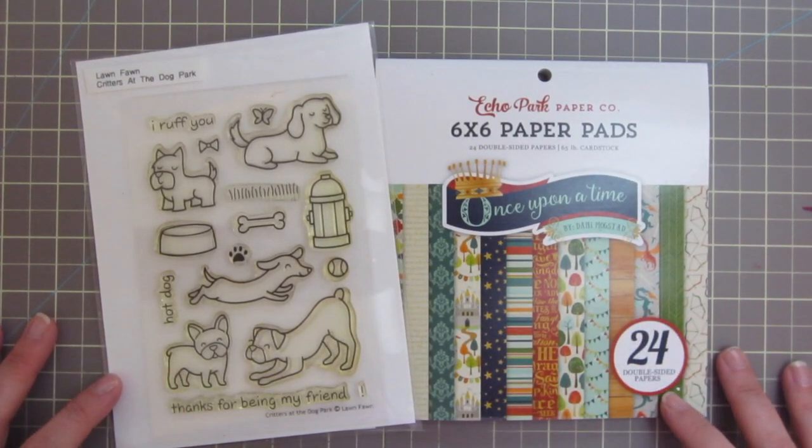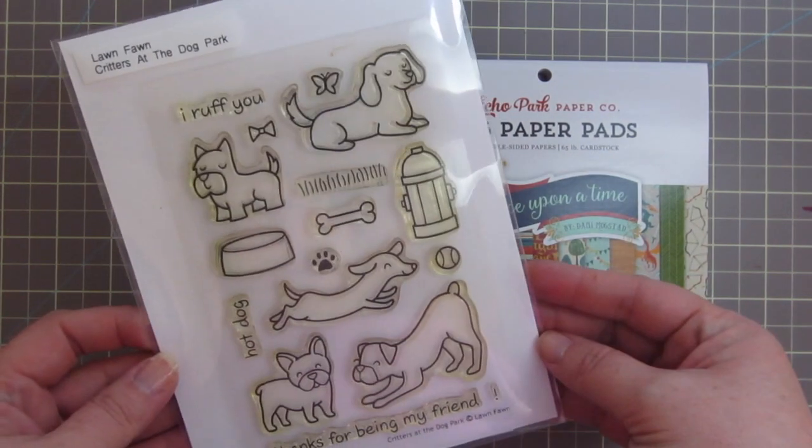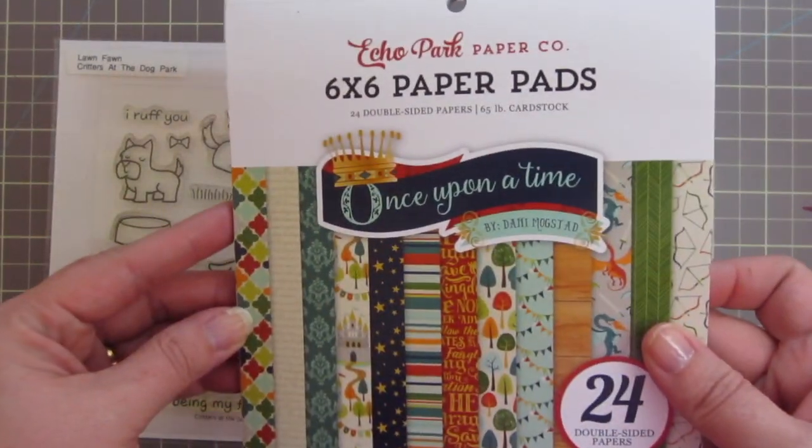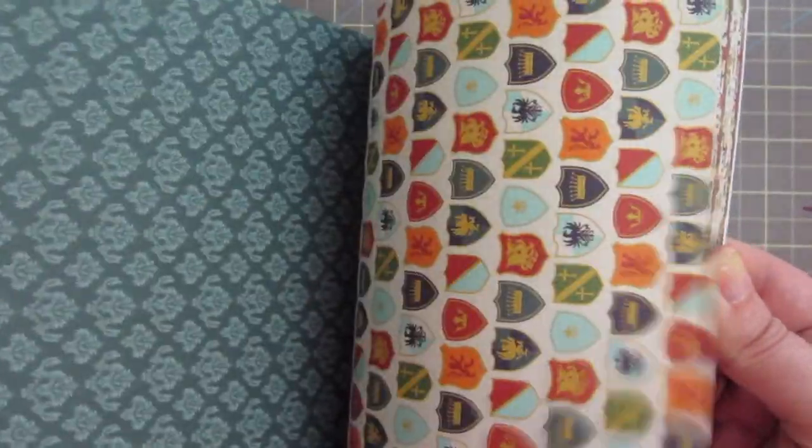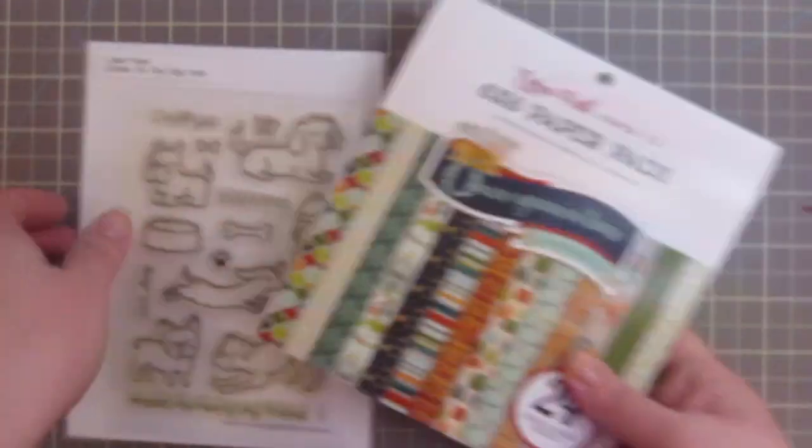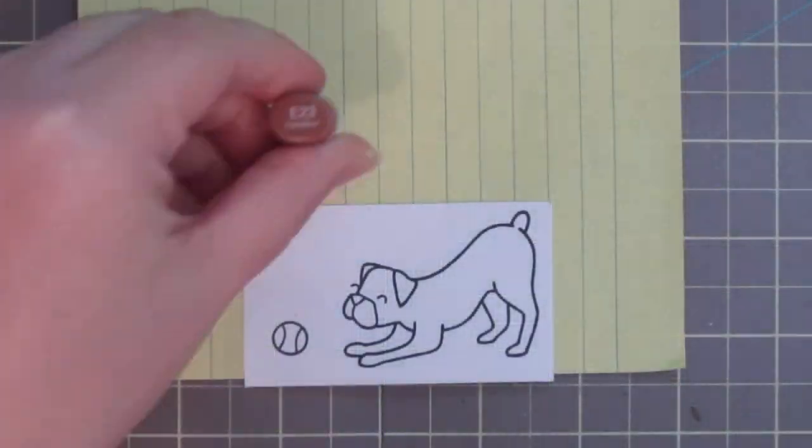Hey guys, it's Christy. Welcome back to my channel. Today I have a cute card for you guys using this Lawn Fawn Critters at the Dog Park stamp set, as well as the Once Upon a Time Prince 6x6 paper pack by Echo Park.